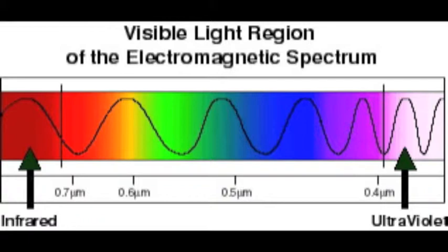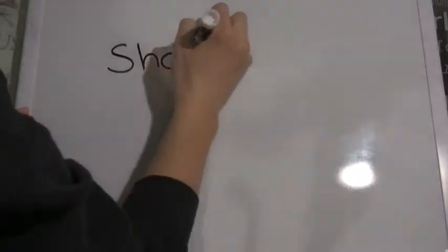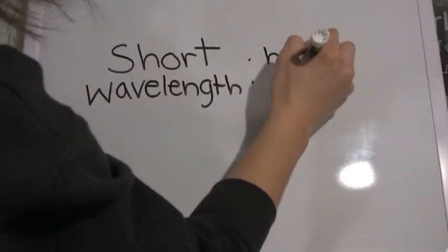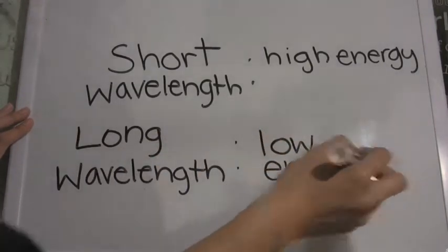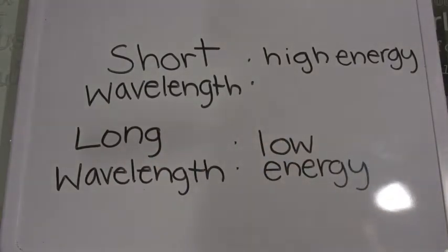As you can see, blue light has a very small wavelength and red light has a large wavelength. This concept also carries on to the energy levels of each color. Blue light has a very high energy, whereas red light has a relatively low energy level. In general, short wavelengths correspond to high energy and long wavelengths correspond to lower energy.